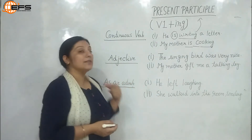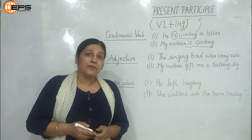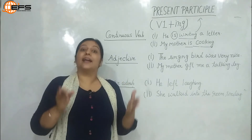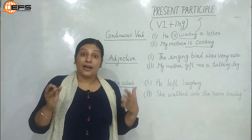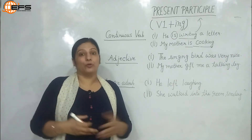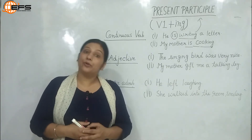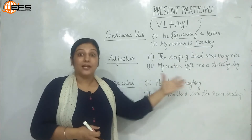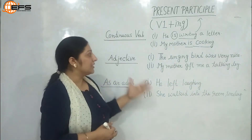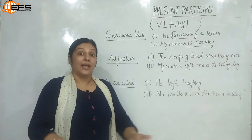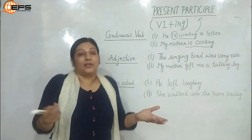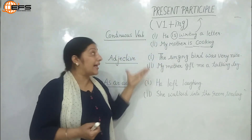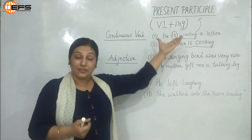The next role of present participle is as an adjective in a sentence. An adjective adds information to a noun or pronoun — it tells the quality of a noun or pronoun. So when we find a present participle being used to tell the quality of a noun, we say it is acting as an adjective. Present participle, V1 + -ing, can come before a noun to describe it.